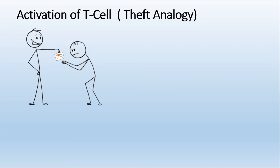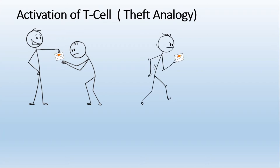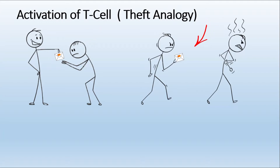After receiving that envelope, this person has two options. He can take it to the authorities — like the police or a housing society security official — and they can work against the thief. I would like to compare that option with the B cell: B cells are activated with the help of T helper cells, and after activation they produce antibodies, also known as immunoglobulins, which fight against pathogens.